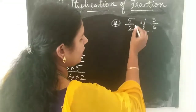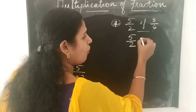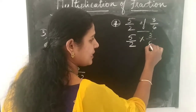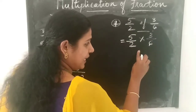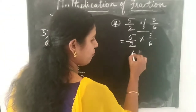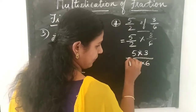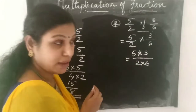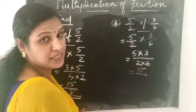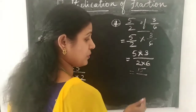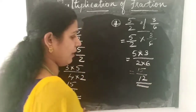Question number 5: we can write 5 into 3 by 6, instead of 'of' we write 'into', giving 5 into 3 divided by 2 into 6. Now 5 into 3 is 15, divided by 2 into 6 which is 12. So we get the answer as 15 by 12.